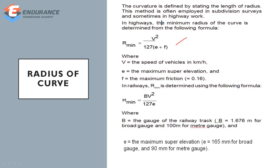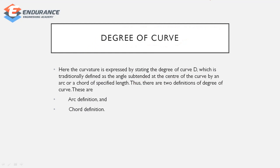The maximum friction coefficient F is 0.16. V is the speed of the vehicle in km per hour, and E is the maximum super elevation. The radius can also be given as R equals V squared divided by 127 E. The degree of curve is defined as the angle subtended at the centre by a standard chord or arc.